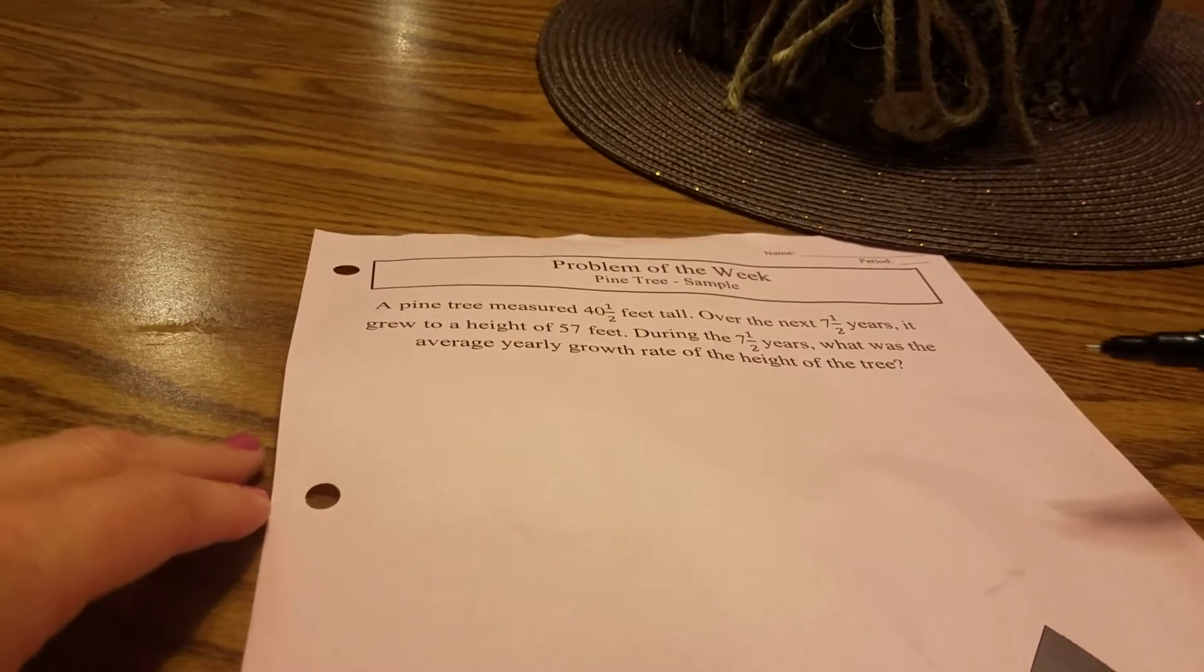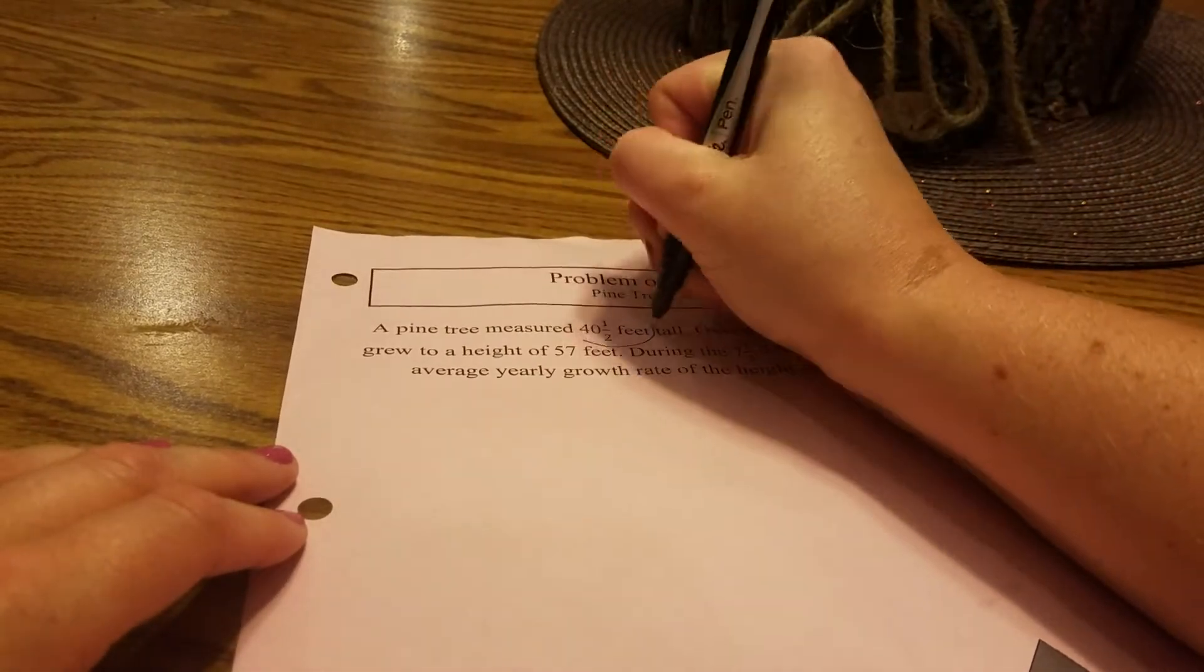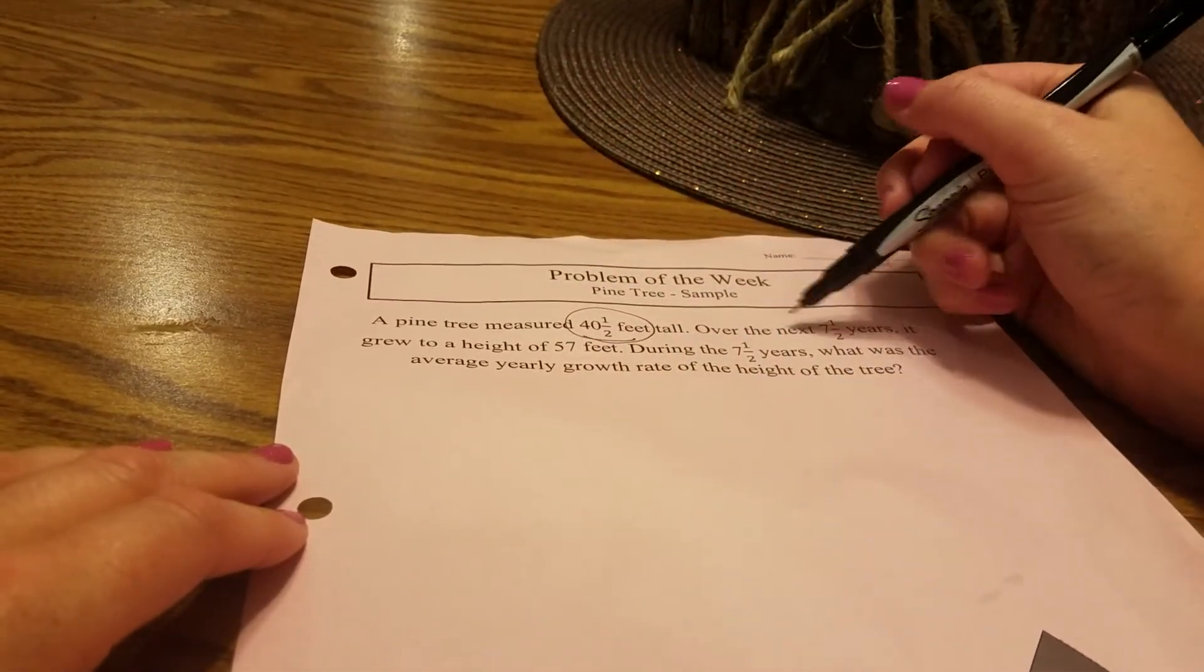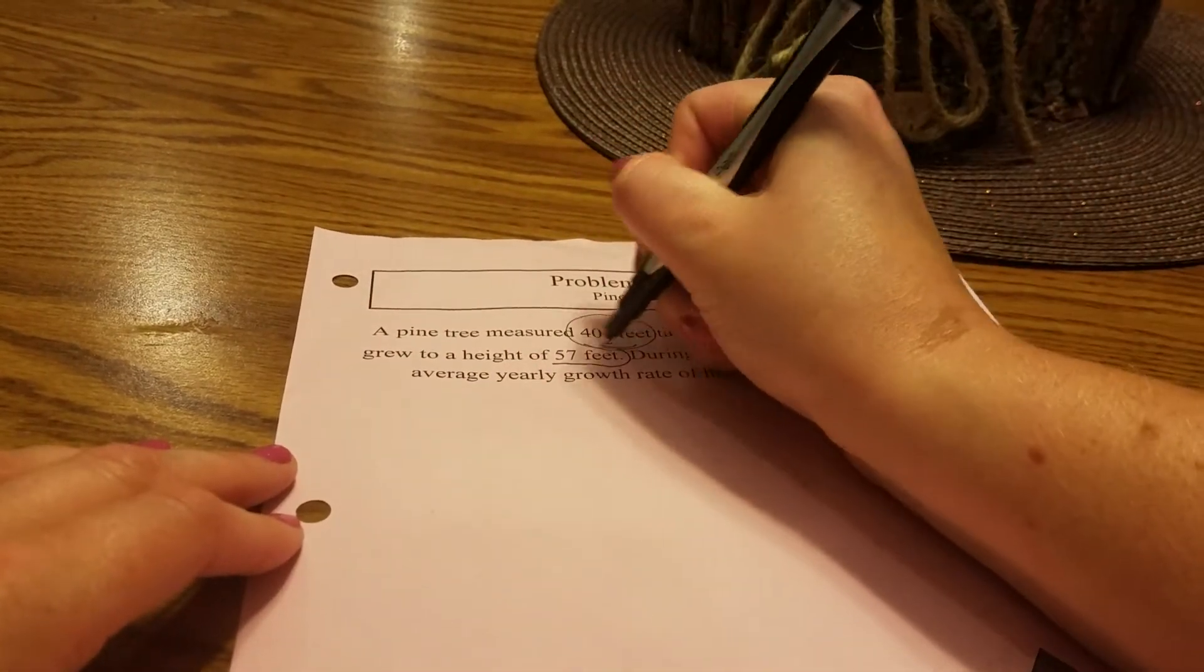This week's problem of the week is about the pine tree sample. It says the pine tree measured 40 and a half feet tall. That's where we started. Over the next seven and a half years it grew to a height of 57 feet.